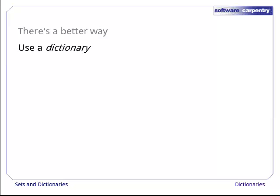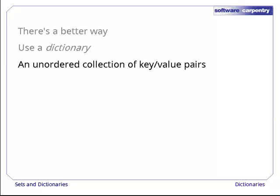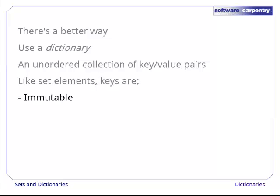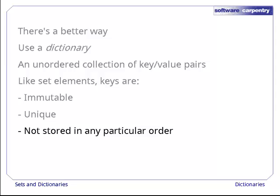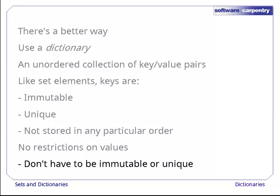That solution uses a dictionary instead of a list. A dictionary is an unordered collection of key-value pairs. Like the elements in a set, the keys are immutable, unique, and not stored in any particular order. There are no restrictions on the values stored with those keys. In particular, they don't have to be immutable or unique.